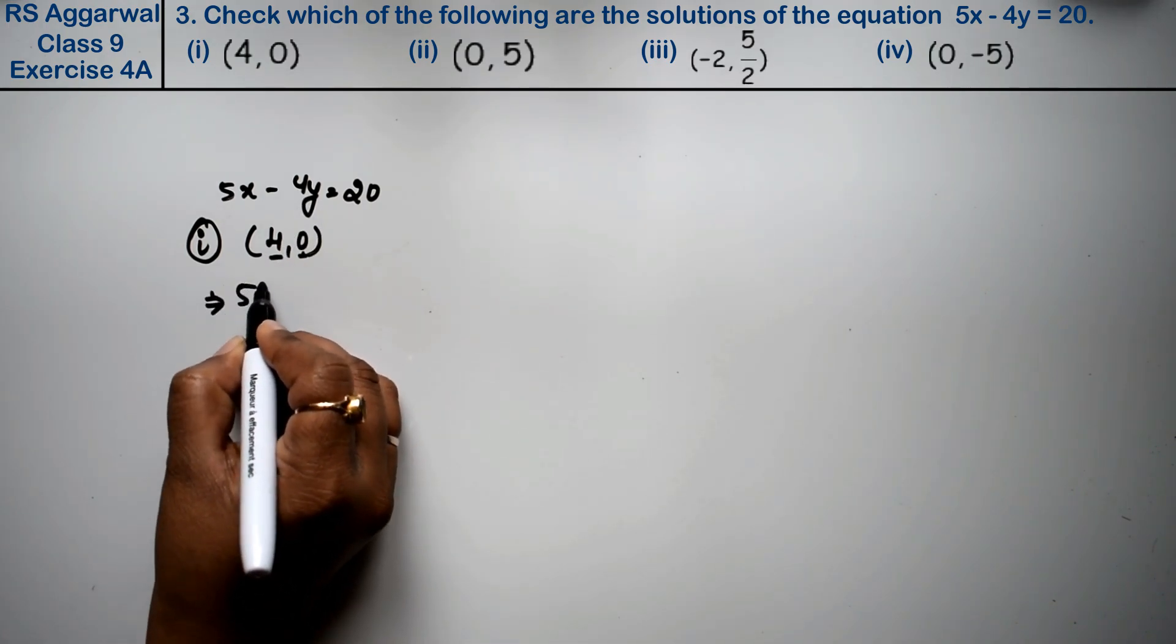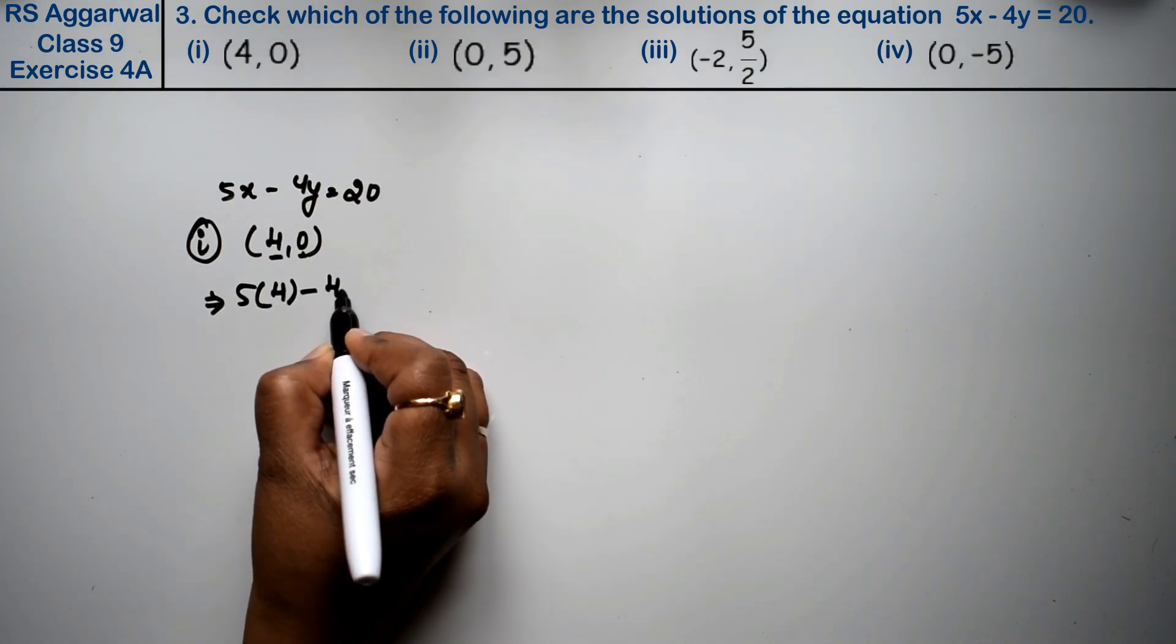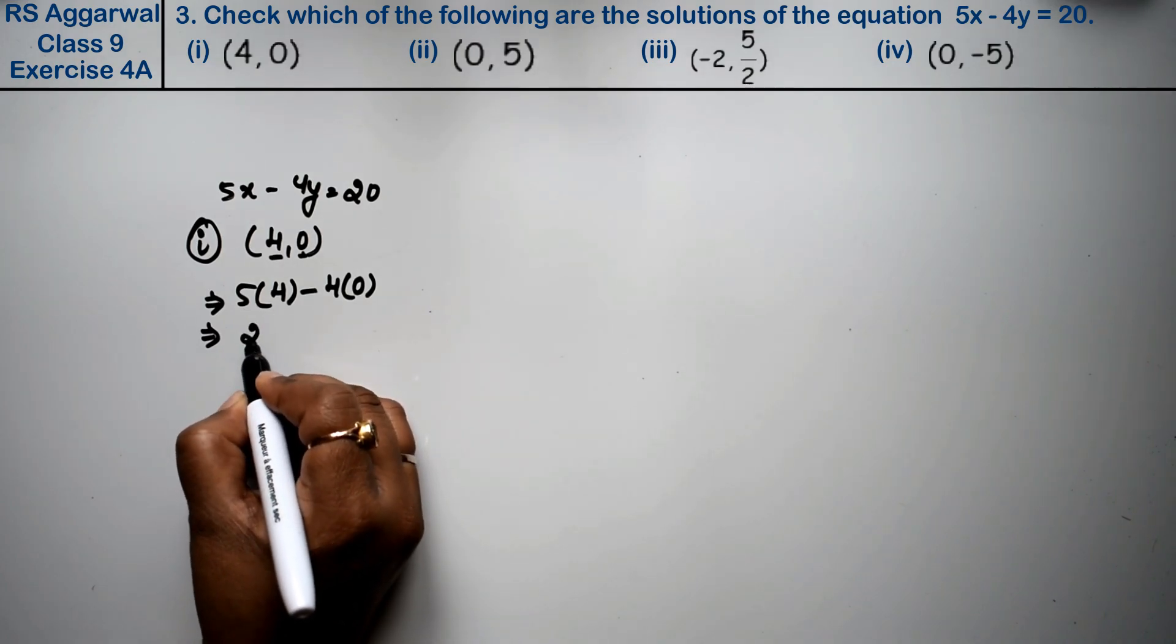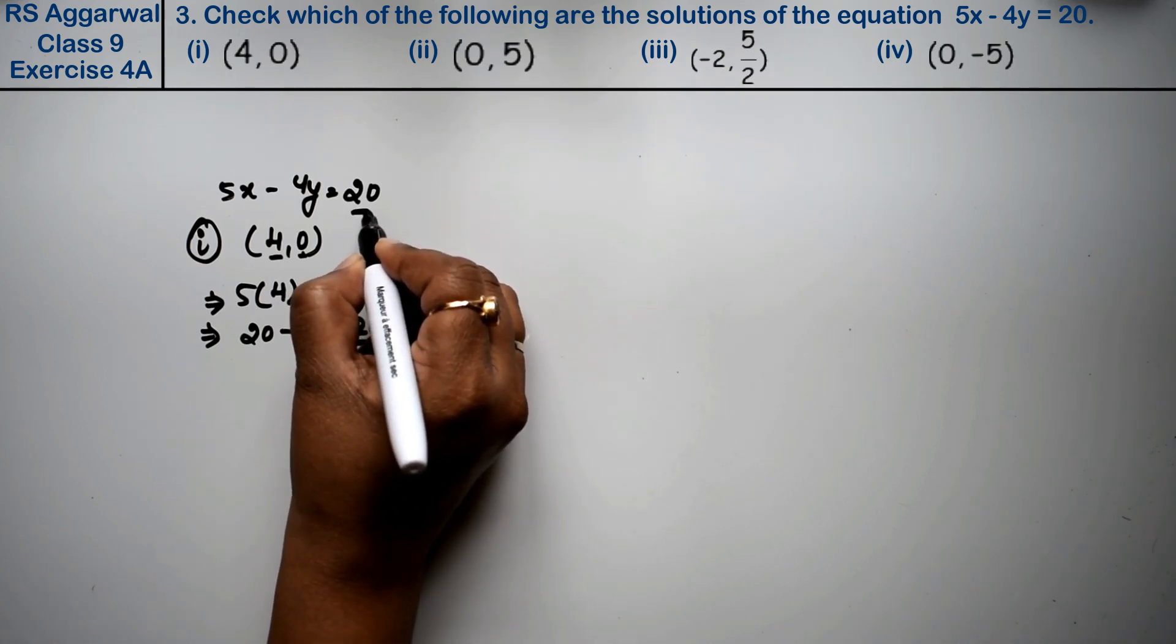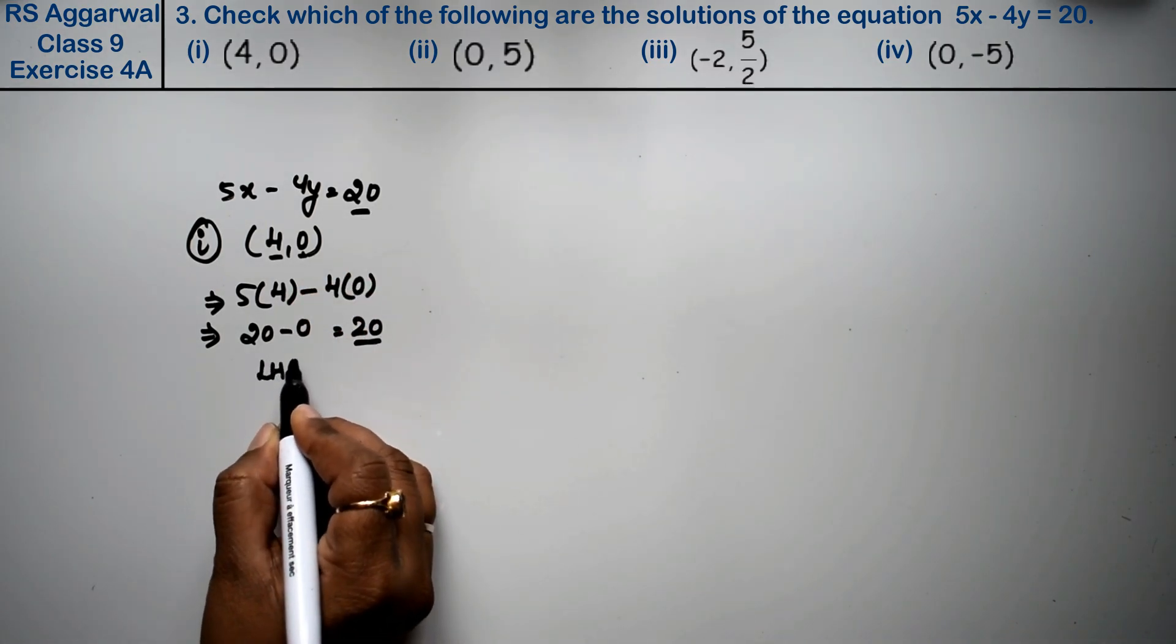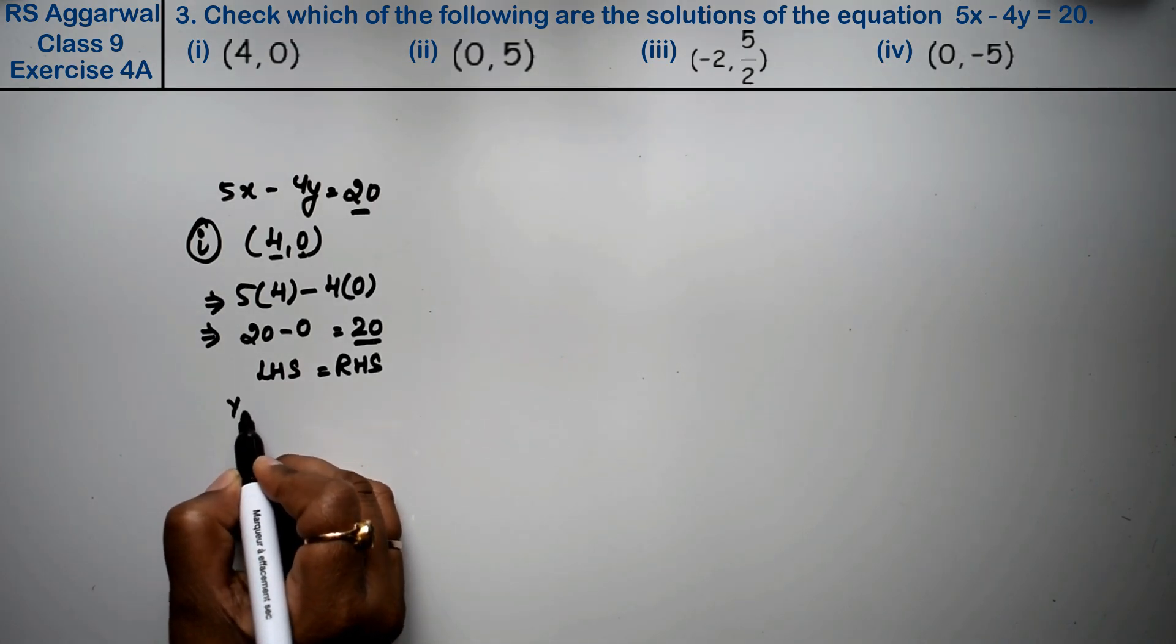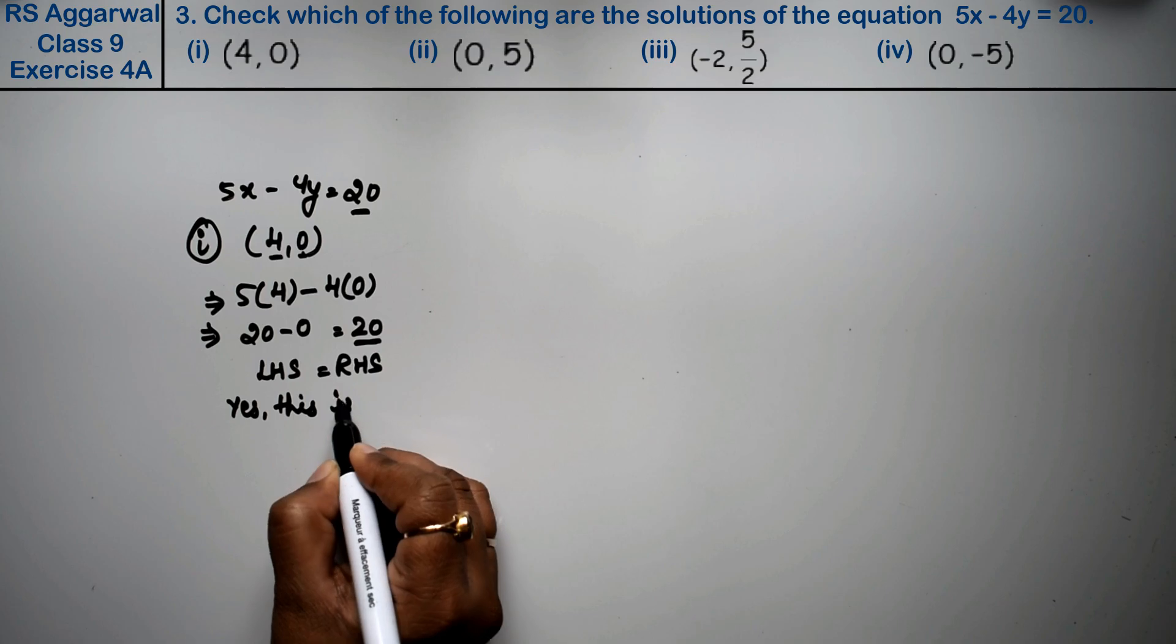So let's see how we do. 5x, we have told the first one, 4 minus 4 into 0. So how much is it? 5 into 4 is 20 minus 0, that means 20. This 20 is also 20. So that means left-hand side is equal to right-hand side. Solution. Yes, this is the solution.